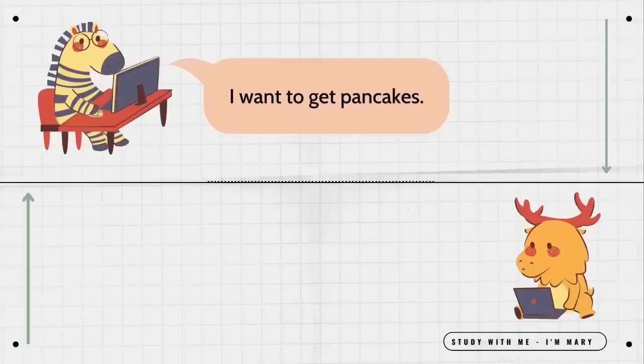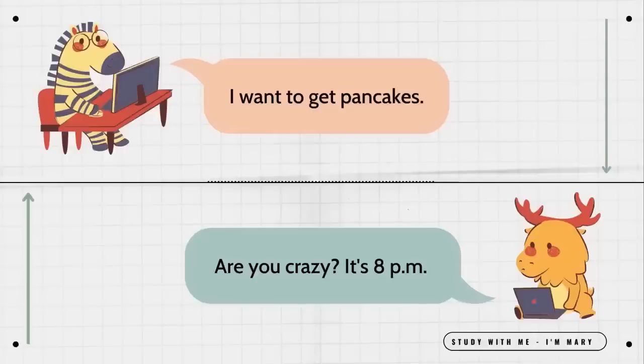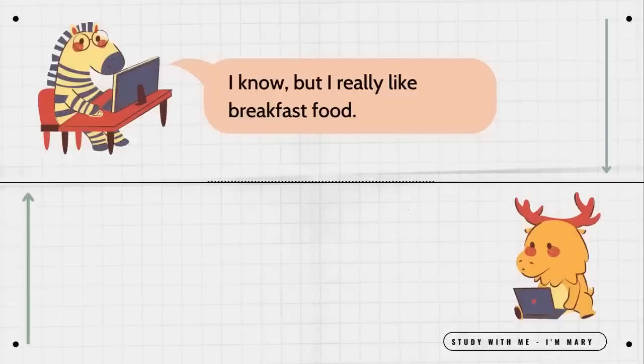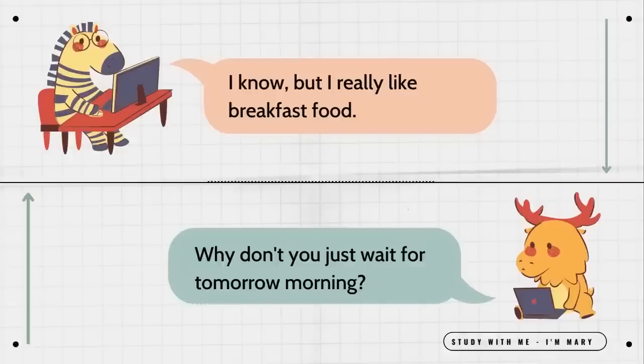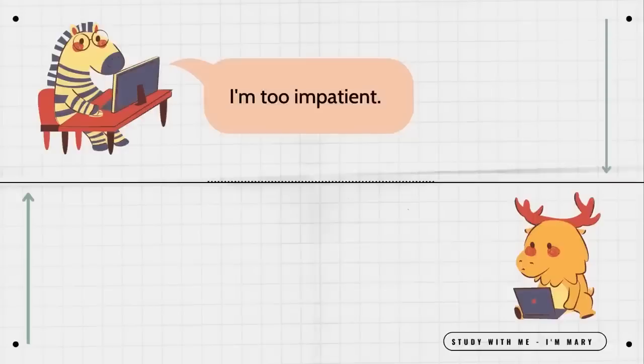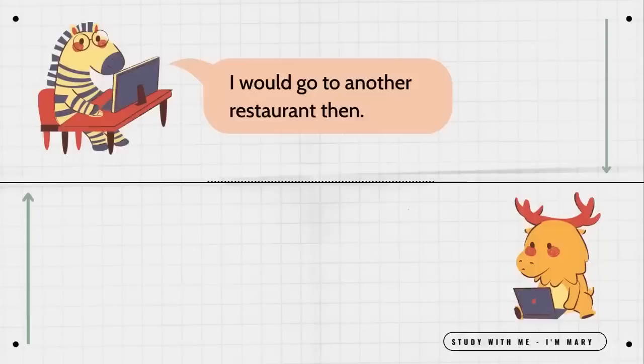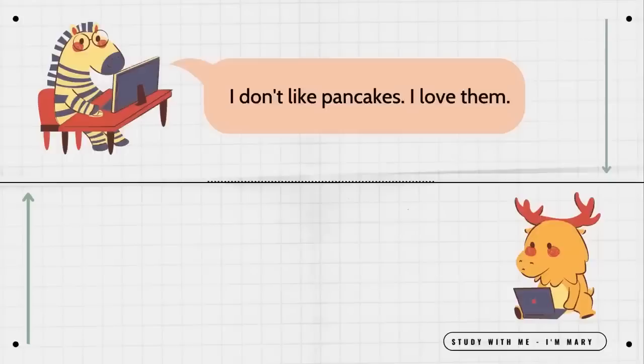I want to get pancakes. Are you crazy? It's 8 p.m. Does it matter? It's dinner time. I know, but I really like breakfast food. Why don't you just wait for tomorrow morning? I'm too impatient. I'm going to get actual dinner food. Sure. Go ahead. You know, they might not have pancakes right now. I would go to another restaurant then. You really like pancakes. I don't like pancakes. I love them.